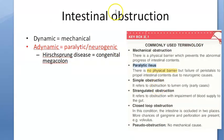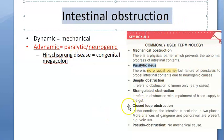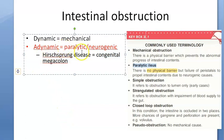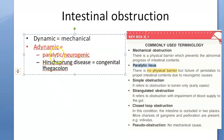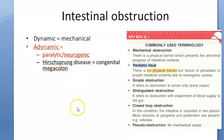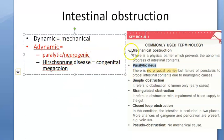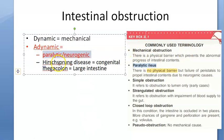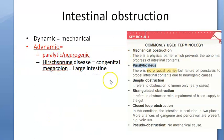Under intestinal obstruction, there are adynamic types — paralytic or neurogenic — where there is no mechanical obstruction, just a nerve problem. Hirschsprung's disease is another type of adynamic, neurogenic obstruction affecting the large intestine, while paralytic ileus affects the small intestine with no physical barrier.